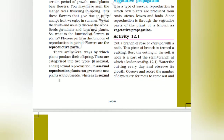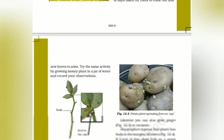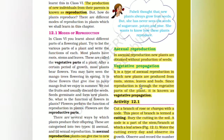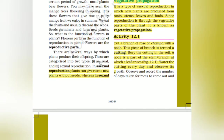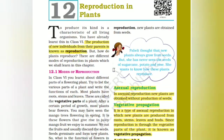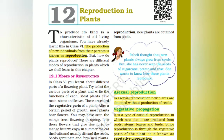There are several ways by which plants produce their offspring. They are categorized into two: asexual and sexual reproduction. In asexual reproduction, plants give rise to new plants without seeds, whereas in sexual reproduction, new plants are produced from seeds.